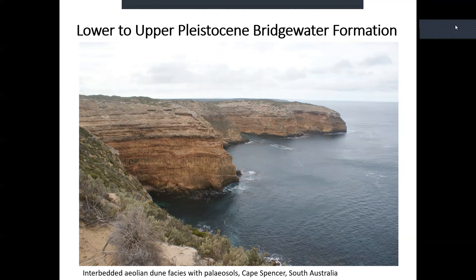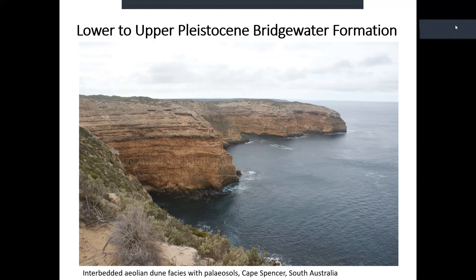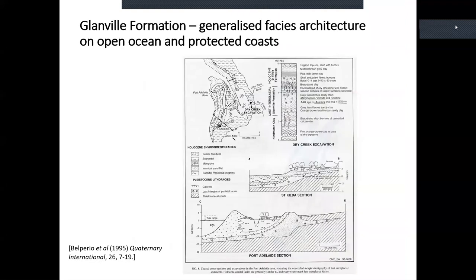If someone could teach me to abseil, I'd like to go down and collect samples for all manner of Quaternary geochronology — this is just in the Workline cutting. It emphasizes that stratigraphical relationship: the Bridgewater Formation aeolian dune facies and then back-barrier lagoon facies — shells etc. — where the dunes in this location, rather like the Coorong Lagoon, are cascading into the back-barrier environment and suffocating the mollusks. It's sort of a scene of mass carnage.